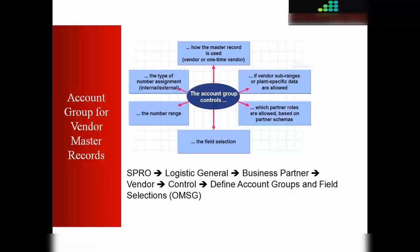With regards to the account group, these are the functionalities controlled by it. First, the account group decides how the master record is used — for example, is it a one-time vendor or a normal vendor? It also controls whether internal or external number range should be used, and the field selection — meaning which fields are mandatory, hidden, or optional when you create a vendor. It also controls whether vendor sub-range or plant-specific data are allowed.